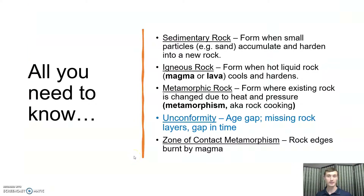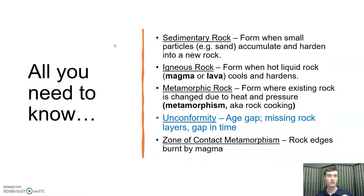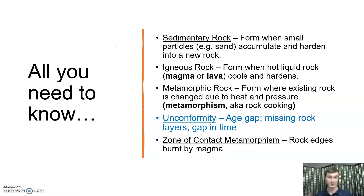Let's review. We have sedimentary rocks, laid down in layers horizontally. We have igneous rocks, which form whenever liquid hot rock — magma or lava — cools. We have metamorphic rocks, which form whenever you take another rock and cook it. We have unconformities or age gaps that represent missing time in the rock record. And we have contact metamorphism — a specific kind of cooking where hot liquid rock injected into another rock burns everything around it on the edges.